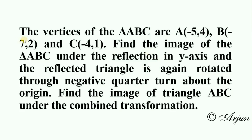Here is an example. The vertices of triangle ABC are A(-5, 4), B(-7, 2), and C(-4, 1). Find the image of triangle ABC under the reflection in the y-axis, and the reflected triangle is again rotated through a negative quarter turn about the origin. Find the image of triangle ABC under the Combined Transformation.